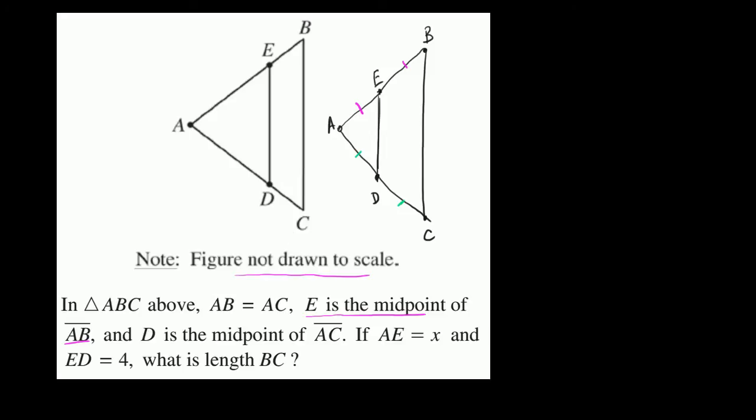If AE is equal to X, then this distance right over here is equal to X. And ED is equal to four. So let me mark this. ED is equal to four, so this length of this segment right over here is four. What is the length of BC?